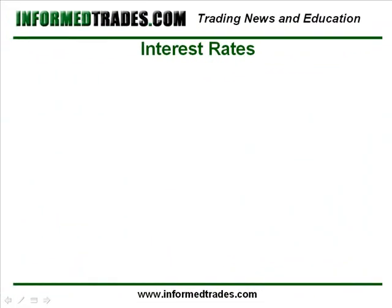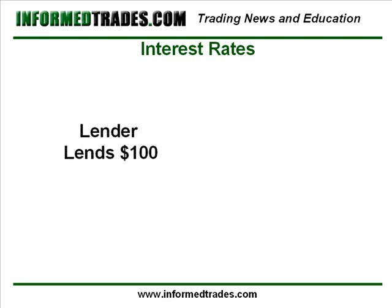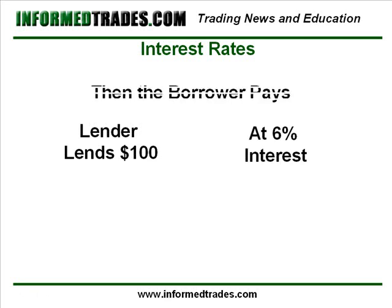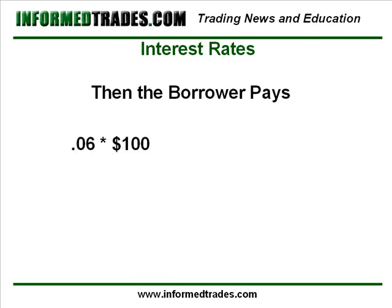Interest rates at their core are the payment that a lender requires from a borrower in return for lending them money, normally stated as a percentage of the amount borrowed. If for example a lender makes a loan to a borrower of $100 for one year at an interest rate of 6%, then the interest payment and therefore the cost of that loan to the borrower is $6.